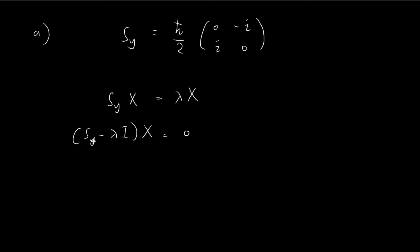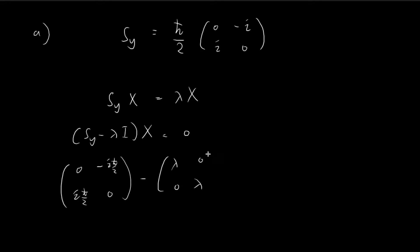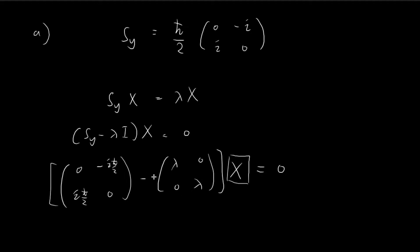Writing this out explicitly, we have the matrix with entries 0, negative i·ℏ/2, i·ℏ/2, 0, minus lambda times the identity, multiplied by x equal to 0. For non-trivial solutions for the eigenvector, the determinant of this term must be equal to 0, because if the determinant is not zero, we can find an inverse matrix and x would just equal 0.